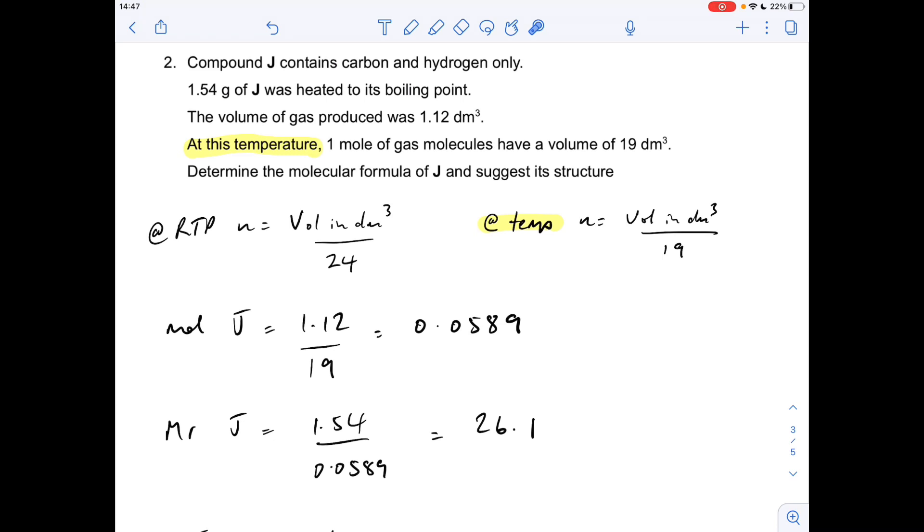So there's a reminder, if you're at RTP, the number of moles is the volume in dm cubed over 24. At the temperature that this gas is at, at its boiling point, the number of moles is the volume over 19. So it's the same formula, it's just got a different, you're just dividing by that new volume. So the moles of J is going to be the volume over 19, so there's that many moles of J.